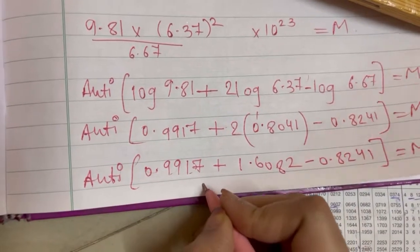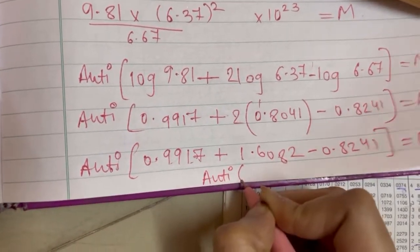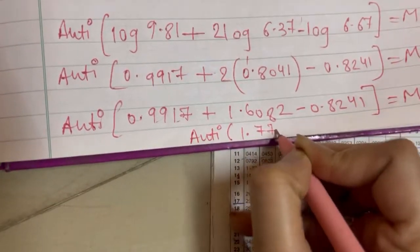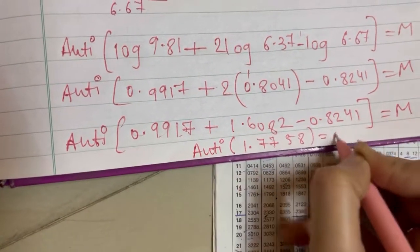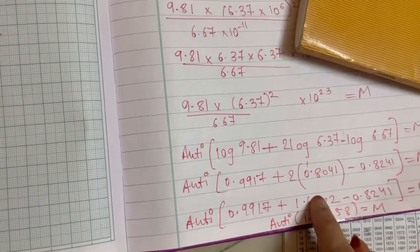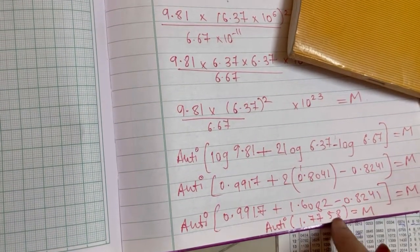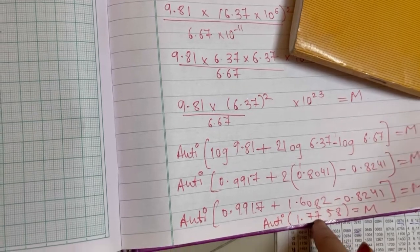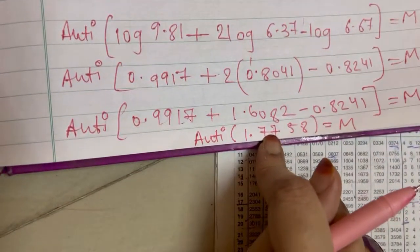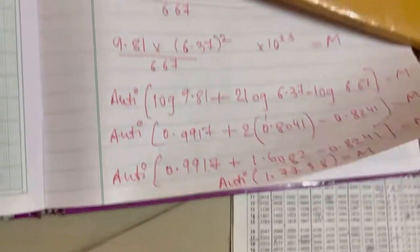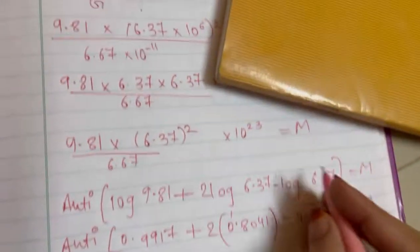So here, we will calculate antilog of 1 point 7, 5, 8. We have added this 2 digit and then we have subtracted this digit, so we got 1 point 7, 5, 8. We'll find antilog of this digit, we'll look for antilog of 77 5 8. We are forgetting to write this 10 raise to 23, so we will write this 10 raise to 23.